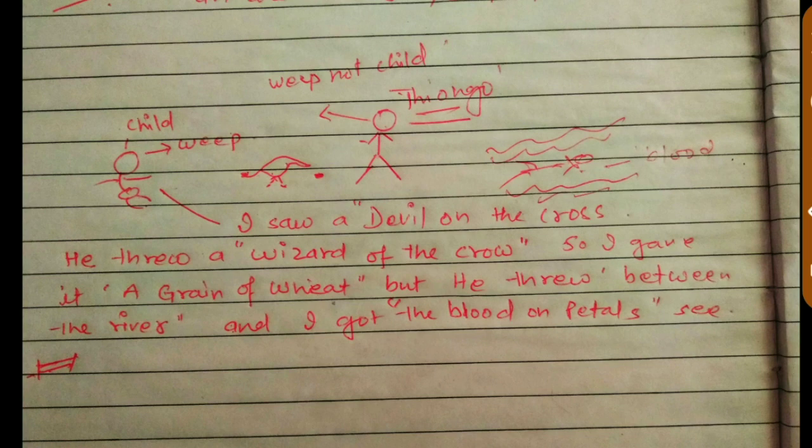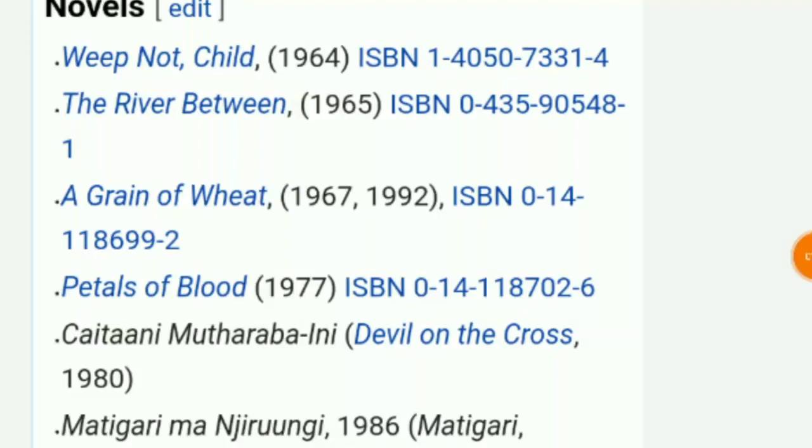The child gave a grain of wheat to him, but he threw the child between the rivers. Do river thi aur unke beech mein fang diya us child ko. And I got the blood on petals.